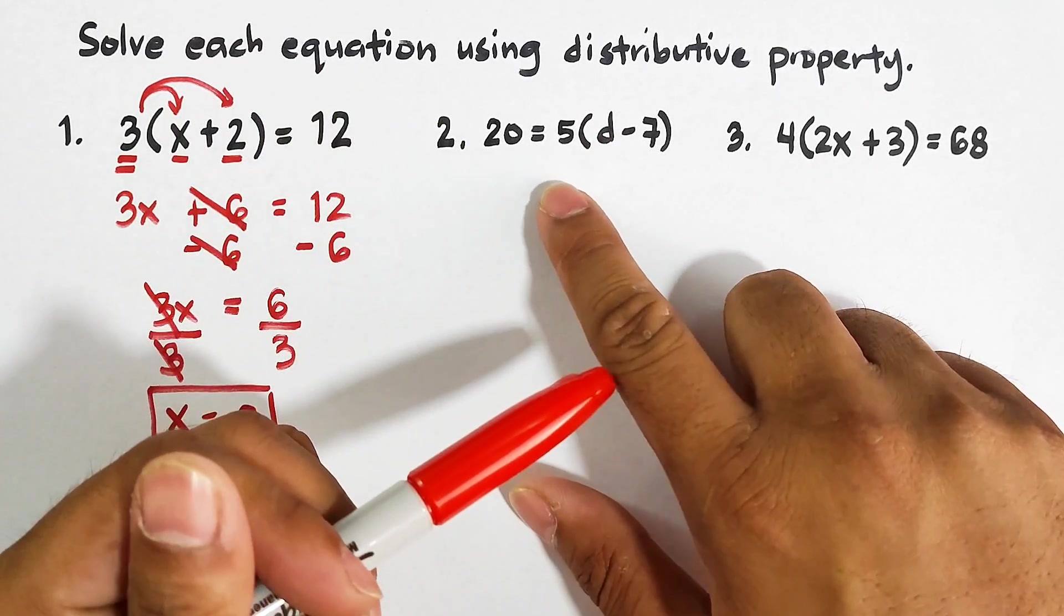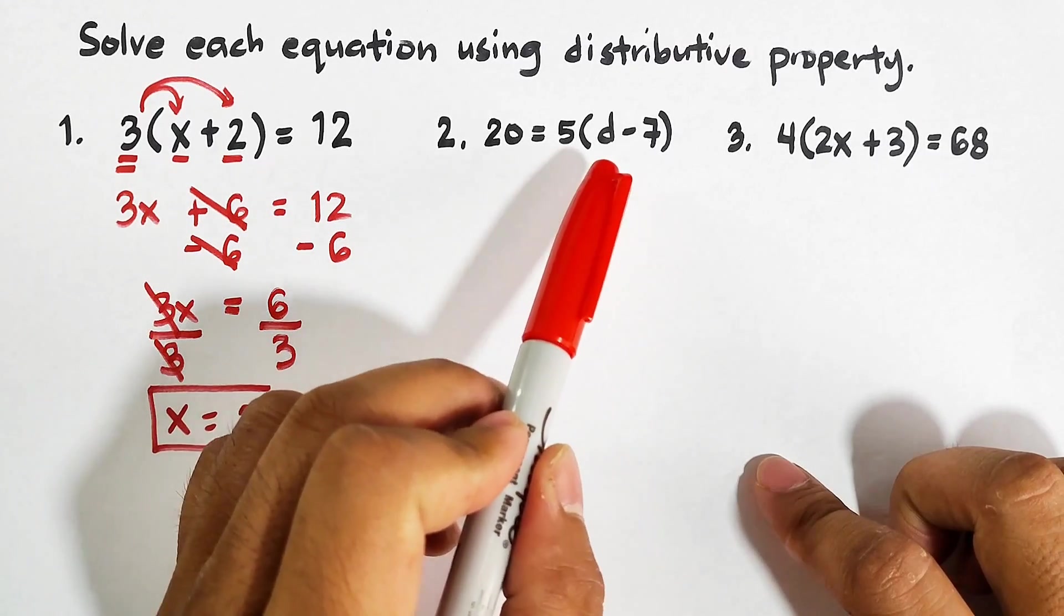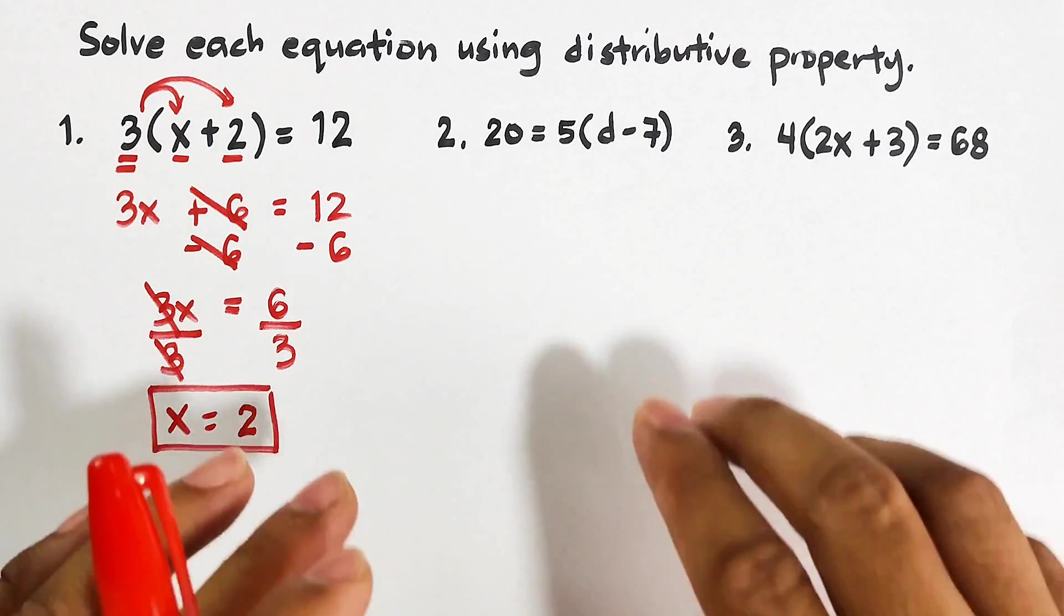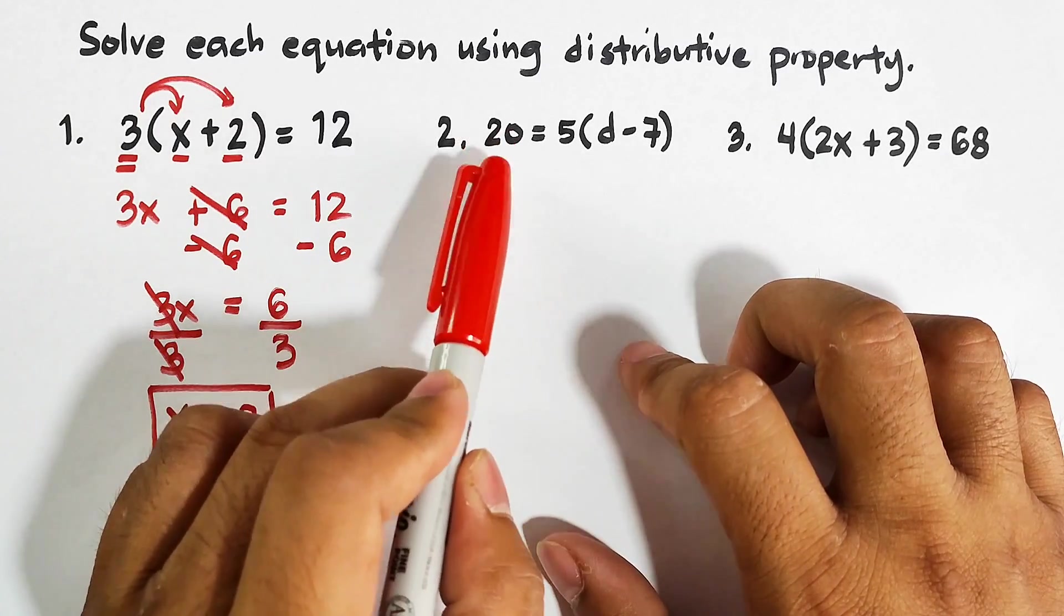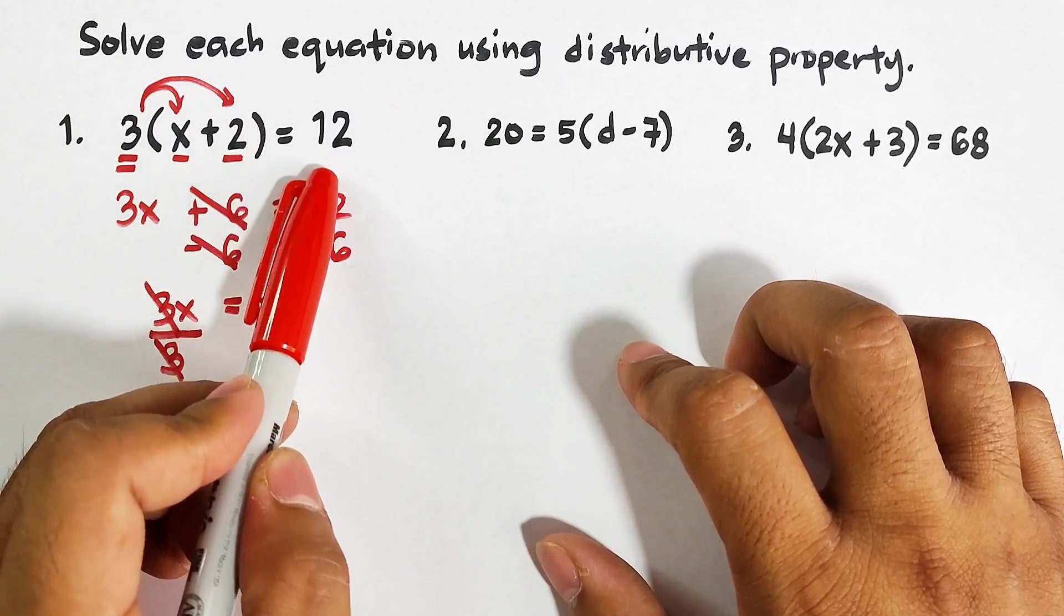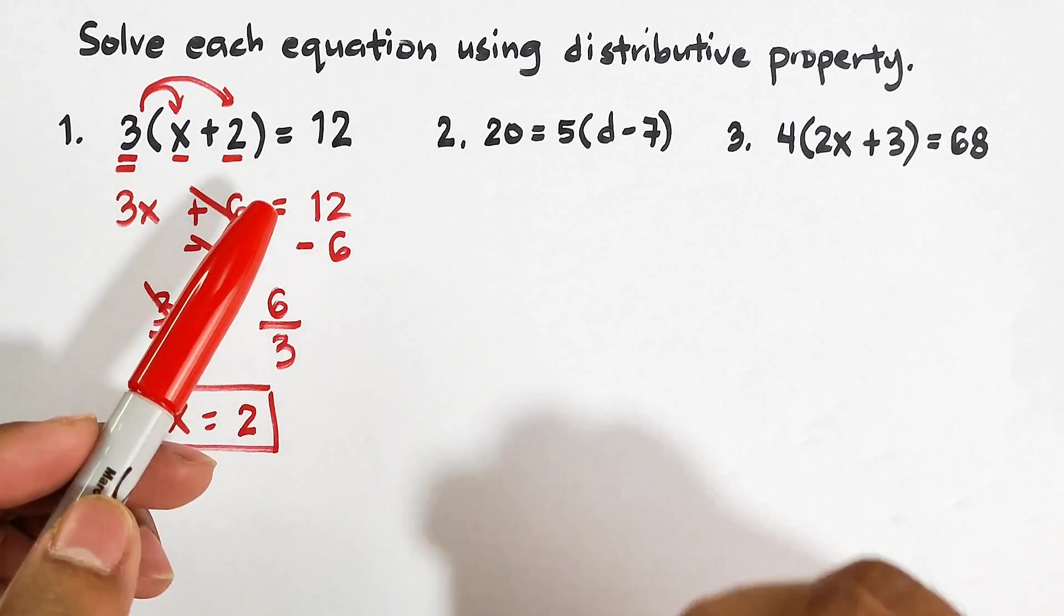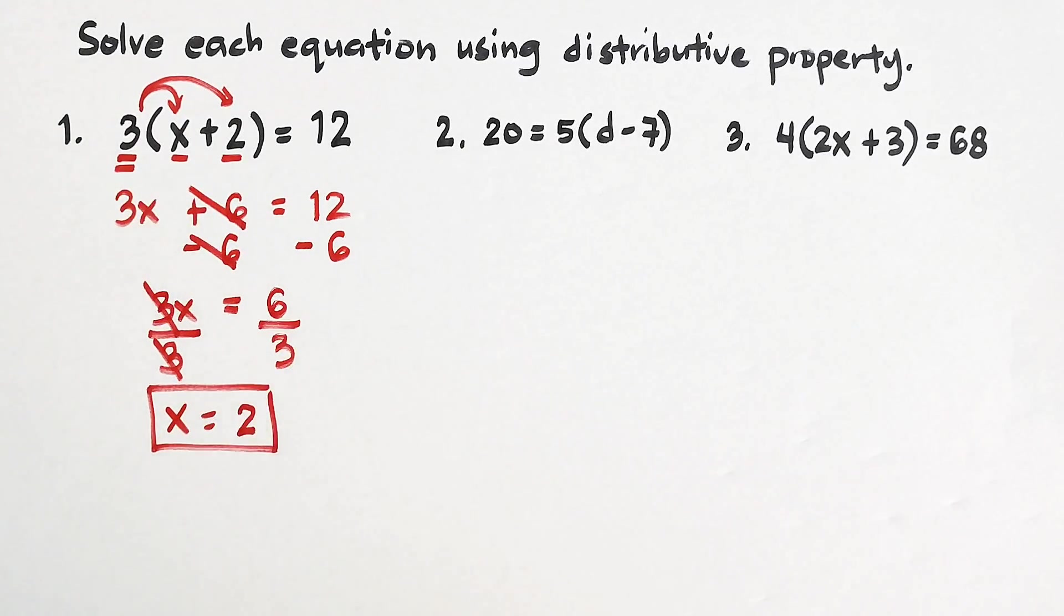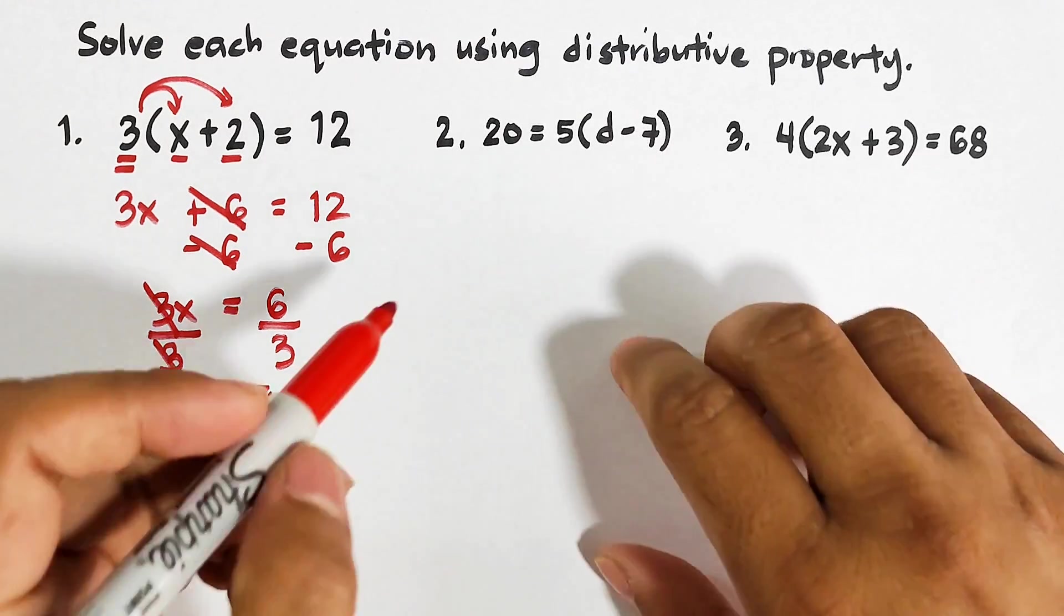We have 20=5(d-7). Don't be confused and don't think that this equation is difficult because here the constant is on the left side while the constant is on the right side. This is an equality, so we can do the same for this example. First, we can simply copy 20.